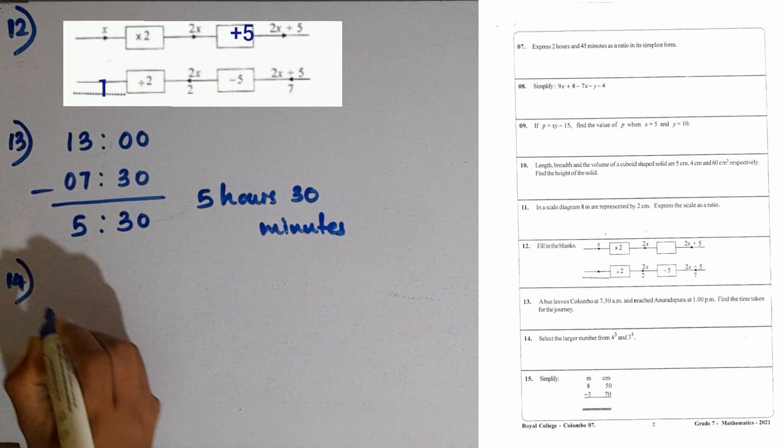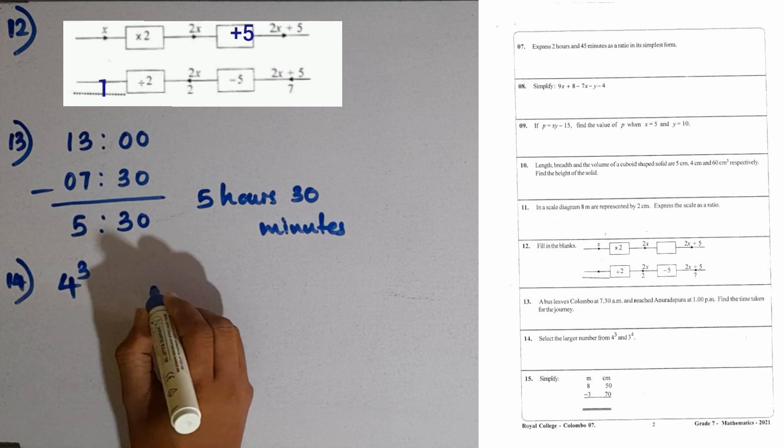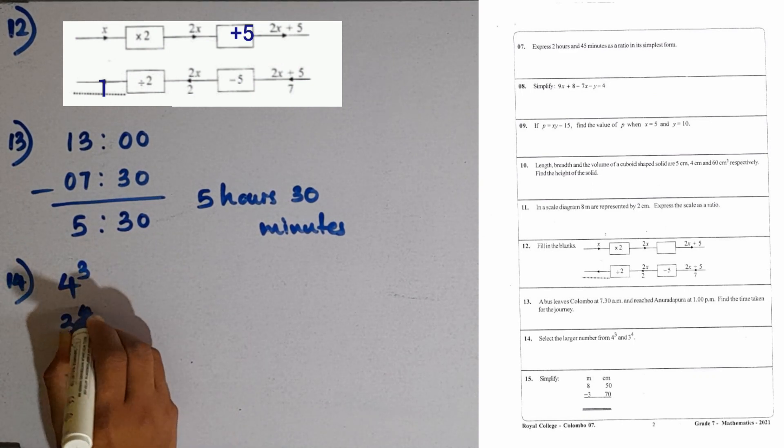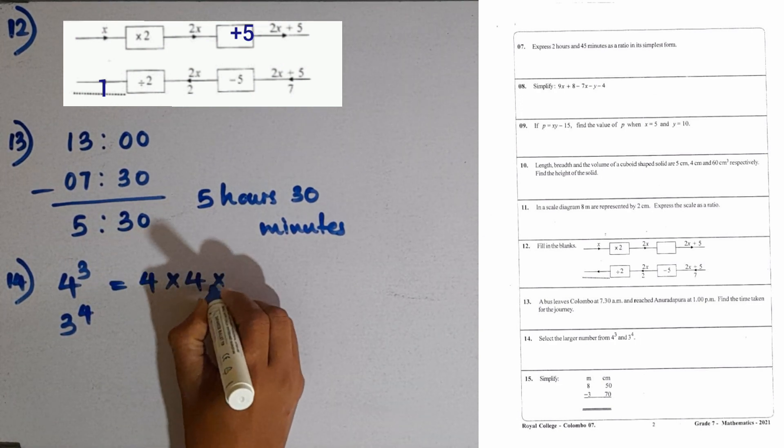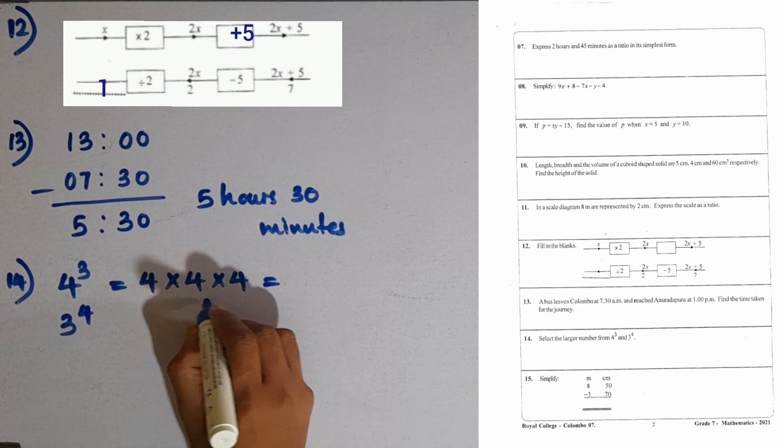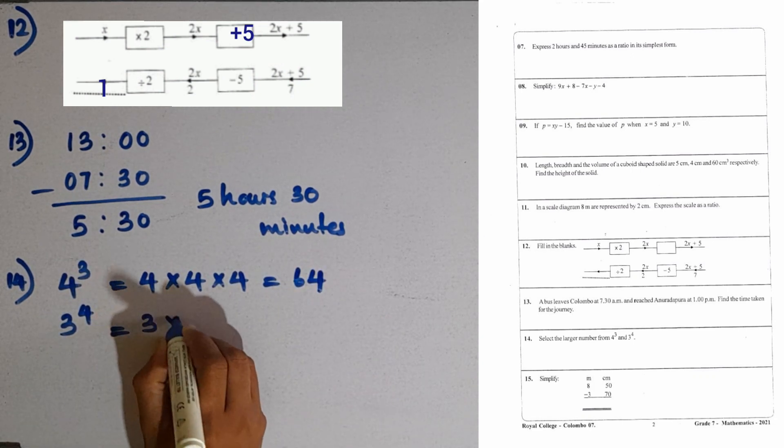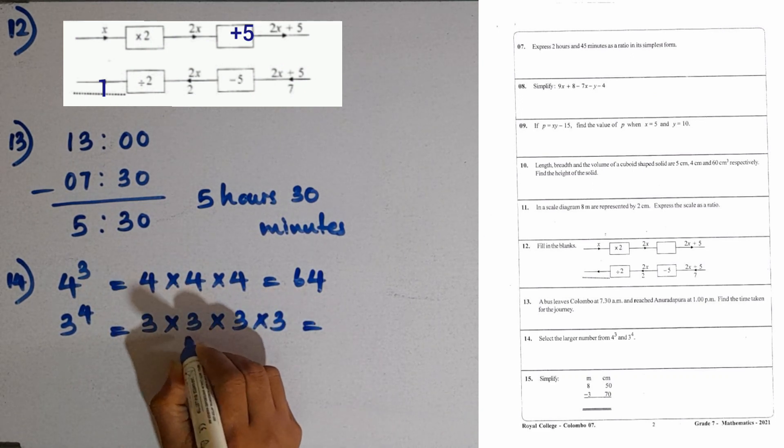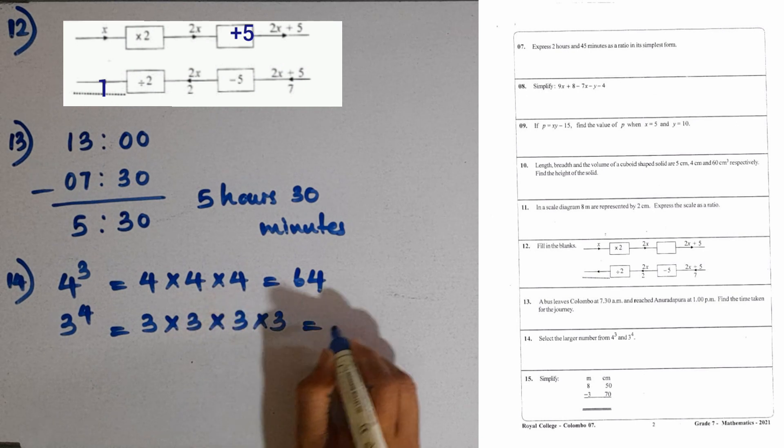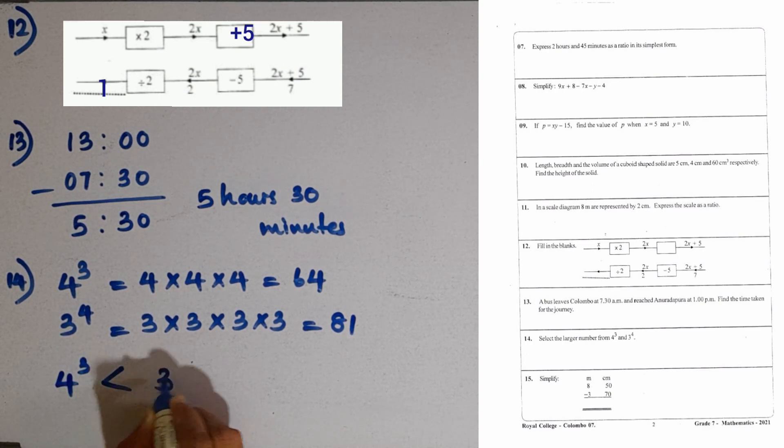Question number 14. Select the larger number from 4 to the power 3 and 3 to the power 4. If you expand this, 4 to the power 3 means 4 times 4 times 4, which is 16 times 4 is 64. Then, 3 to the power 4 means 3 multiplying by 3 multiplying by 3 multiplying by 3. 3 times 3 is 9, 9 times 3 is 27, 27 times 3 is 81. So, 81 is the larger one. We can use this sign: 4 to the power 3 is less than 3 to the power 4.